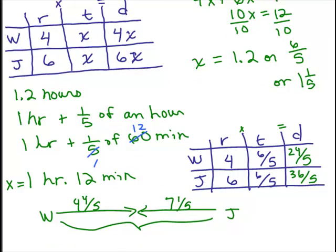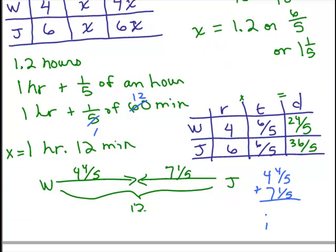And so the question is, does that add up to 12 miles? And yes, it does. Because you could check that 4 and 4 fifths plus 7 and 1 fifth is 11 and 5 fifths which is the same thing as 11 plus 1. So yes, that does make sense. That's 12.